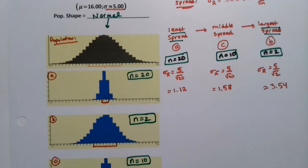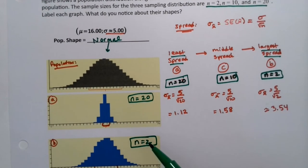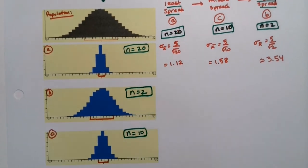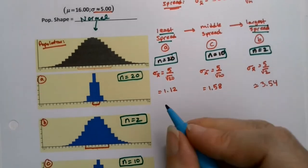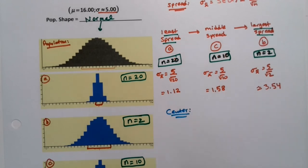So we've answered the one question because it wanted us to label which one was n equals 2, which one was n equals 10, which one was n equals 20. And we can see how to do that based on what we know from the central limit theorem. Now, it didn't specifically ask us for that, but I might as well mention right now, the center for all of them is the same number.